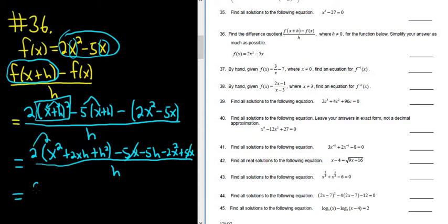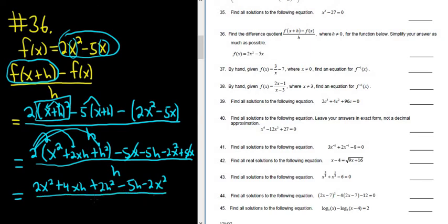Now we distribute the 2. So it would be 2x squared, and then it looks like 2 times 2 is 4, so 4xh. Then you distribute the 2, so you get 2h squared, and then minus 5h, minus 2x squared. That's all being divided by h. And it looks like the 2x squared cancels.